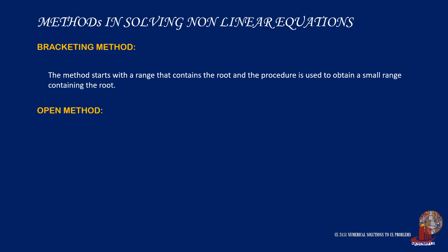The second method is called the open method. This method starts with a guess where each iteration will be using a different guess point.